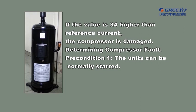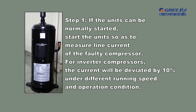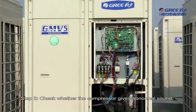Determining compressor fault. Pre-condition 1: the unit can be normally started. Step 1: if the unit can be normally started, start the unit so as to measure the line current of the faulty compressor. For inverter compressors, the current will be deviated by 10% under different running speeds and operation conditions. Step 2: check whether the compressor gives abnormal sound.